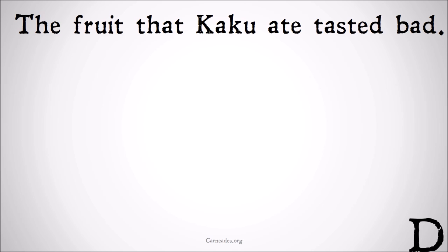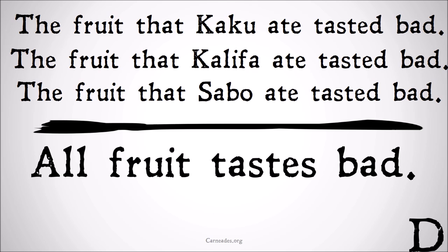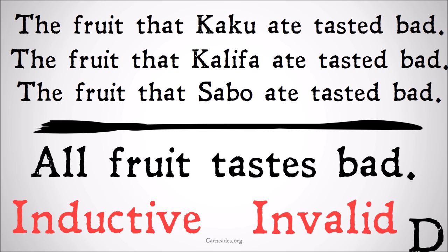One more. 'The fruit that Kaku ate tasted bad, the fruit that Khalifa ate tasted bad, the fruit that Sabo ate tasted bad. Therefore, all fruit tastes bad.' This is an inductive argument, because the premises are trying to make the conclusion seem more likely — they're trying to provide support for it. And being an inductive argument, it can't be valid; it is an invalid argument. You can also check the invalidity even separate from the inductive-deductive distinction: are the first three premises, if they are all true, is it possible that the conclusion is false? Yes — it's possible that three specific fruits tasted bad and there are still fruits that taste good. So the argument is invalid.